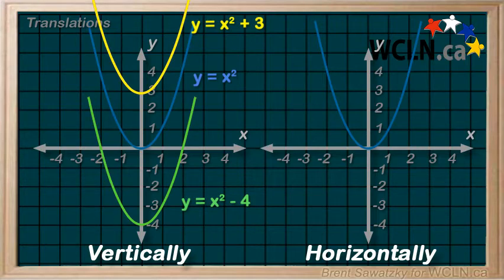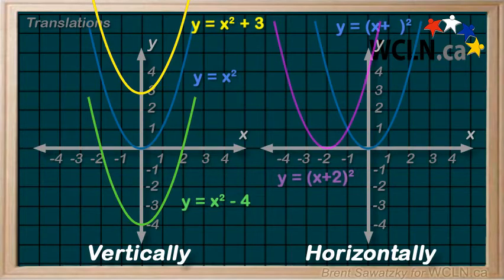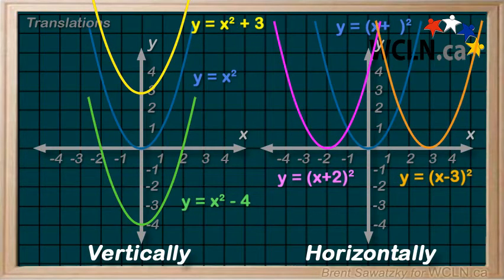To translate a graph horizontally, your shifting number is in with the x. In this case, you'll find that the positive number in here actually shifts the graph to the left, that is in the negative direction, and a negative number in here shifts the graph to the right, that is in the positive direction. Let's look at some examples.